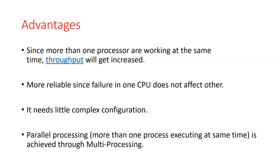What exactly is throughput? In a single unit of time, how many processes are going to execute — that is throughput. Within a single unit of time, more processes are going to execute because there are multiple processors. This is more reliable since failure in one CPU does not affect other CPUs, as they work independently.